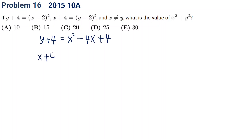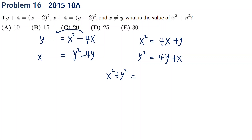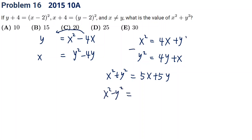Expanding gives x squared minus 4x plus 4 on one side, and x plus 4 gives y squared minus 4y plus 4. The plus 4s cancel. Moving 4x over gives x squared equals 4x plus y, and similarly y squared equals 4y plus x. Adding these, x squared plus y squared equals 5x plus 5y.